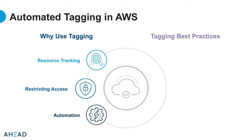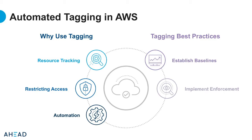In order to effectively use tags, AHEAD recommends that you establish tagging baselines for common tags across resources, that you implement tag enforcement through auditing and automation, and that you utilize AWS CloudFormation or Terraform that can automatically tag resources upon deployment.